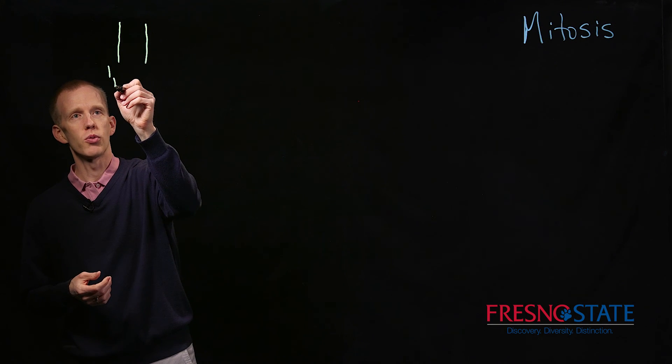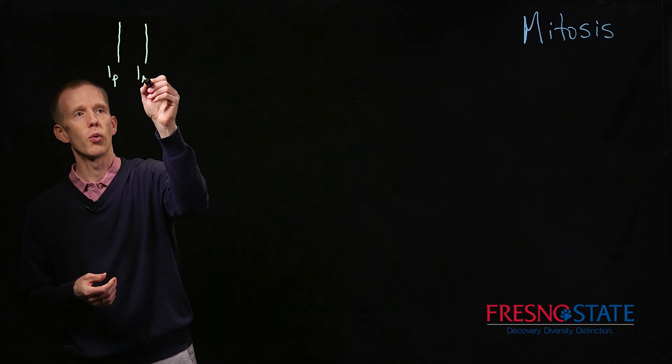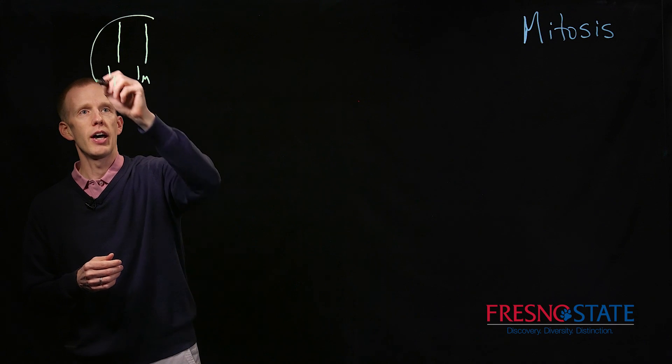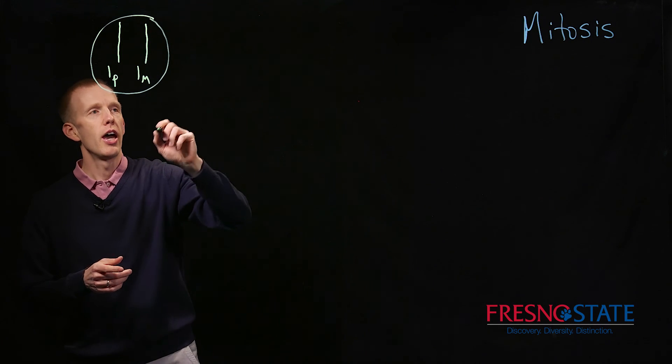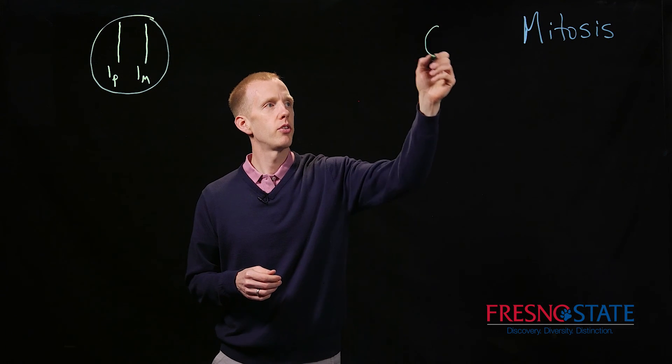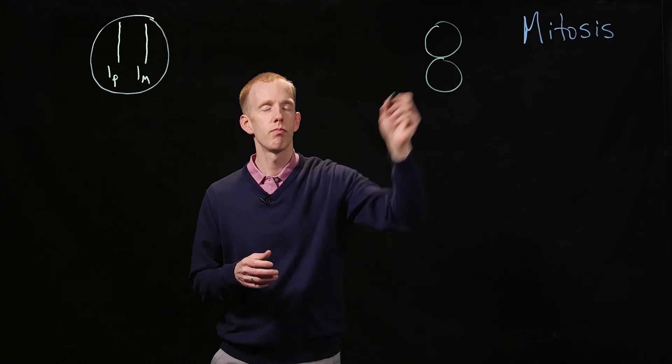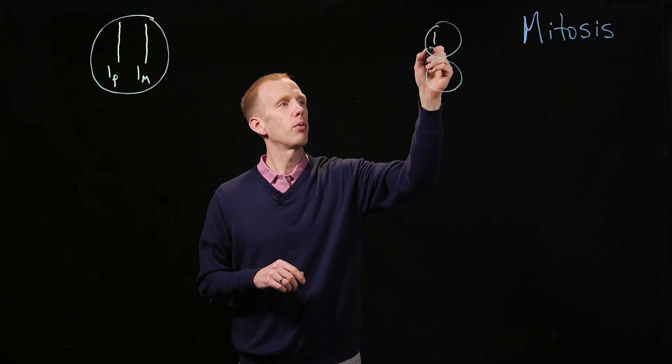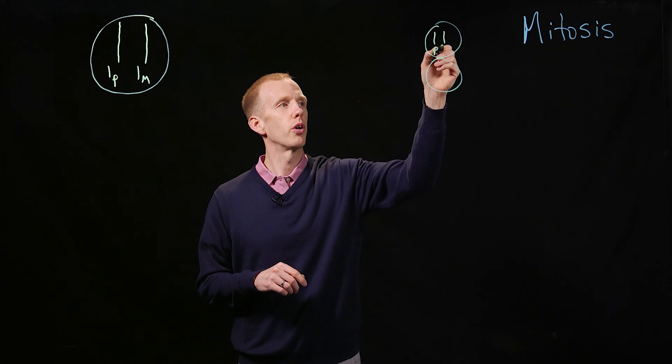And I usually refer to these as one P for paternal and one M that was inherited from the mother, and those will be inside a cell. And if we want to get to the position where we have two cells, because an organism is growing, that each have the same complement of chromosomes.